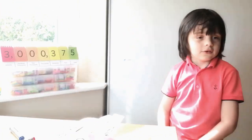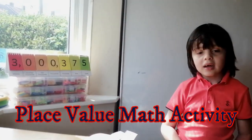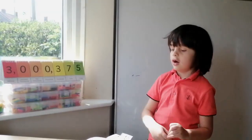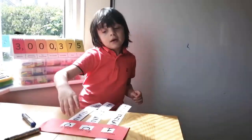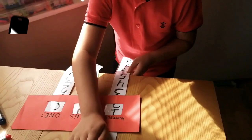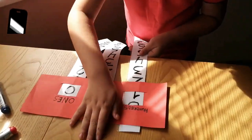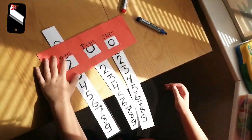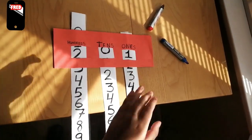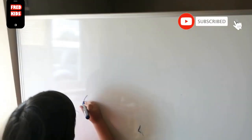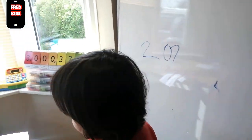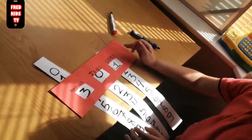Hi guys, today we are going to do this bio math activity. We will do a hundred all the way to nine hundred and ninety-nine. I'll go with one hundred, then two hundred. If you put one it's two hundred and one. Can you write two hundred and one on your board? Two hundred and one.